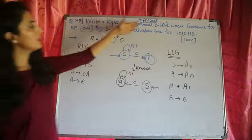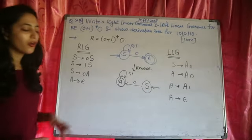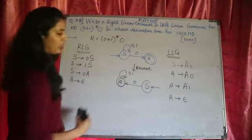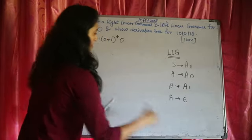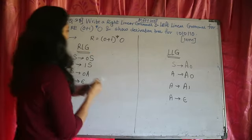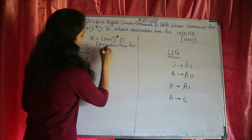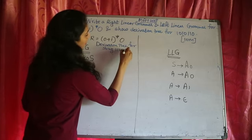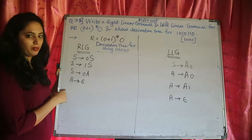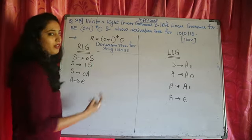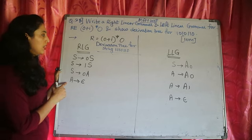Now our first part is solved. The next part is to show the derivation tree for the string 1 0 1 0 1 1 0. We will draw the derivation tree for both the right linear and left linear grammar. We start the derivation tree — we have 4 production rules. Every derivation always starts with the start rule. Here, 3 are start rules, so you can use any one of these 3, but not the epsilon rule.